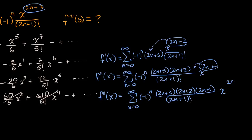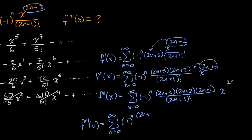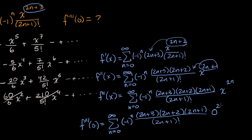Now evaluating at x equals zero: f triple prime of zero is the sum from n equals zero to infinity of negative one to the n times two n plus three times two n plus two times two n plus one, over two n plus one factorial, times zero to the two n. For any n not equal to zero, zero to that power is just zero and that term disappears.